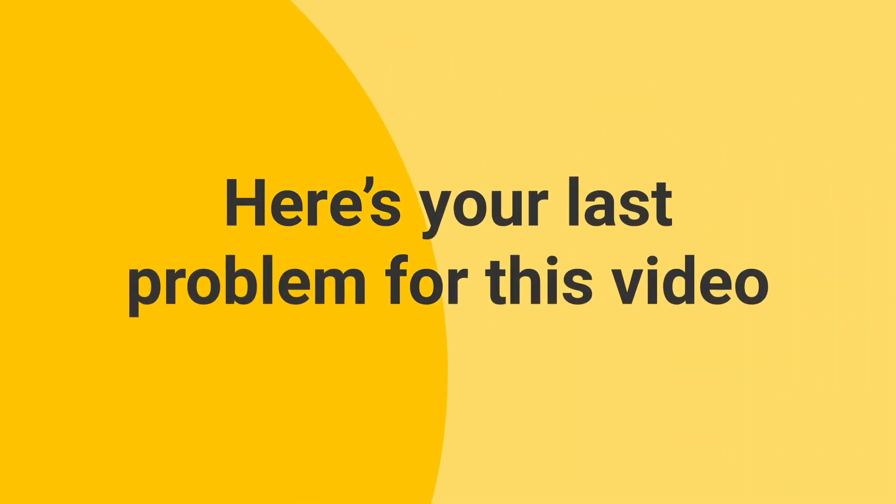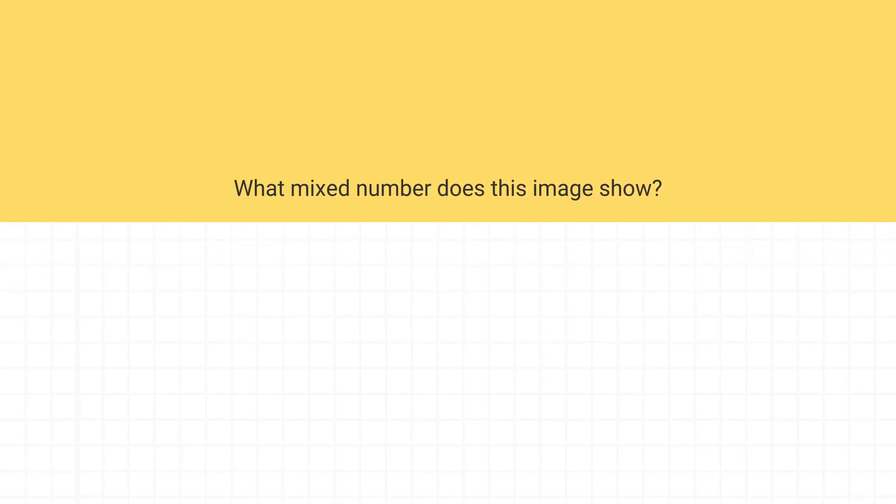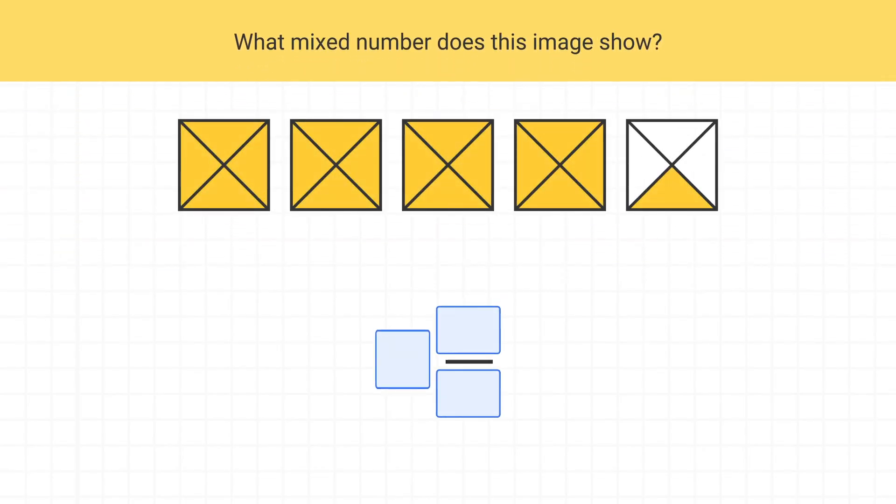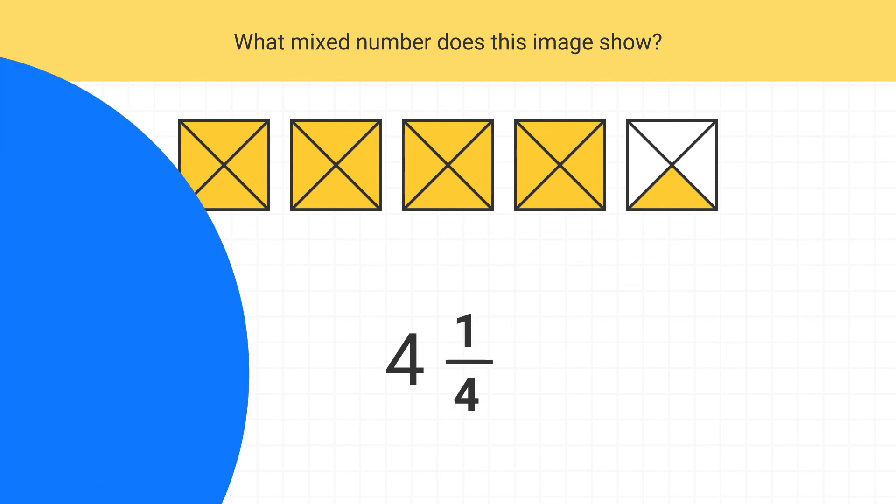Now here's your last problem for this video. What mixed number does this image show? We can see that four squares are fully shaded, so we'll write four as our whole number. Then we can see that one-fourth of the last square is shaded. Our mixed number is four and one-fourth. Great.